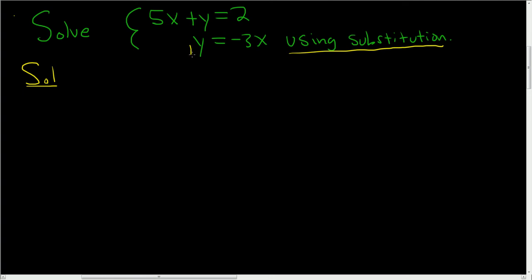Well, in this case, everything has already been solved for y. So we're going to take the y and put it right here. So it'll be 5x plus, now instead of y, it's going to be negative 3x. So negative 3x equals 2.